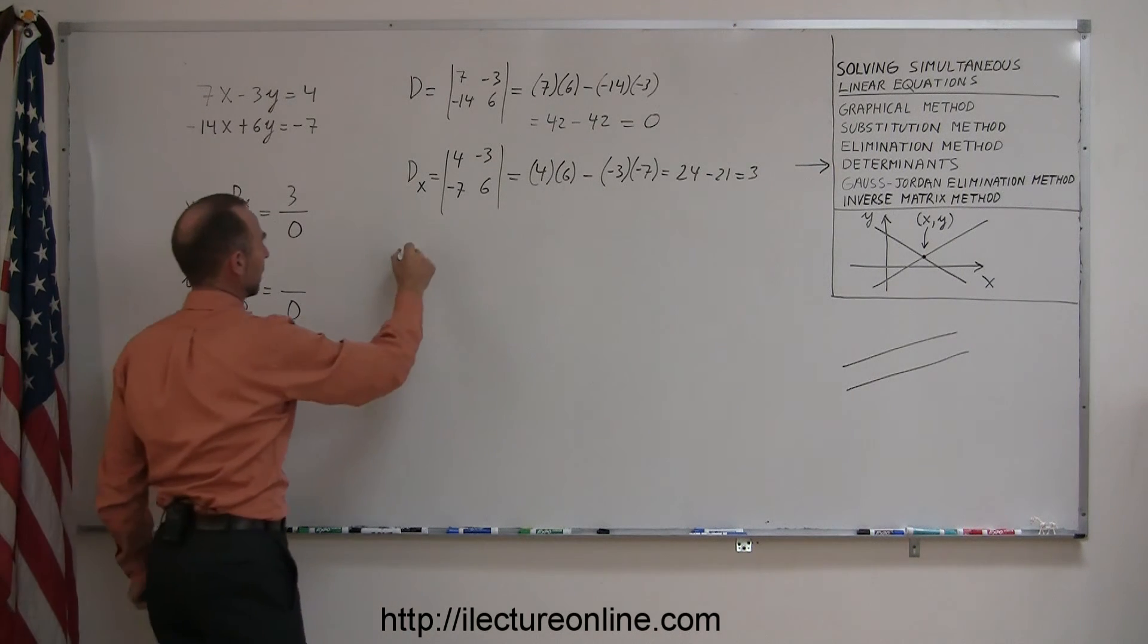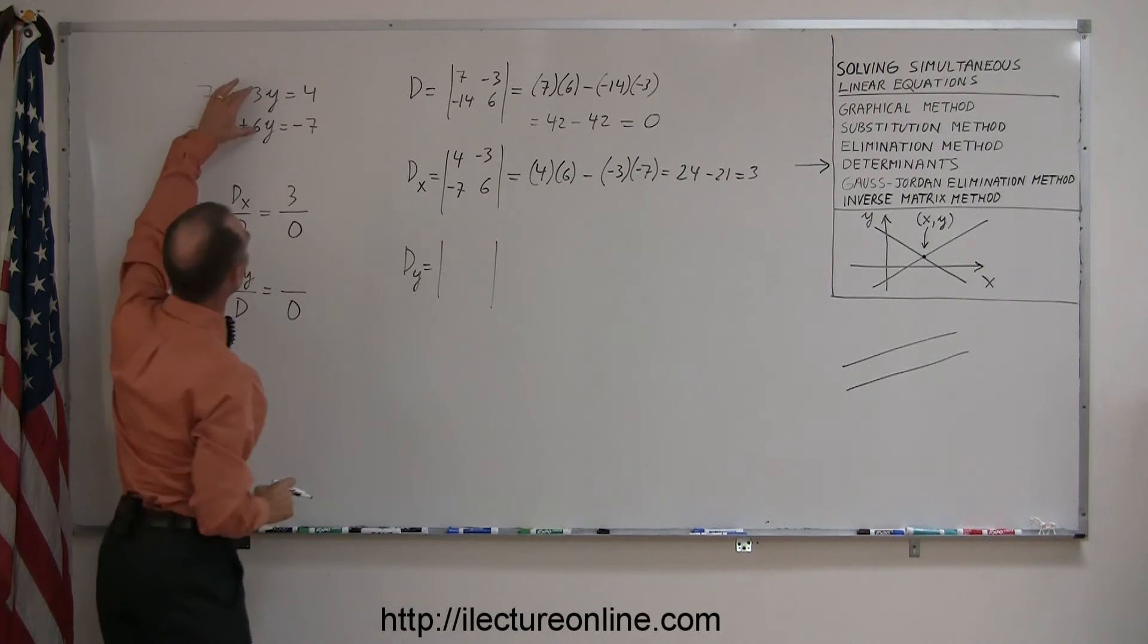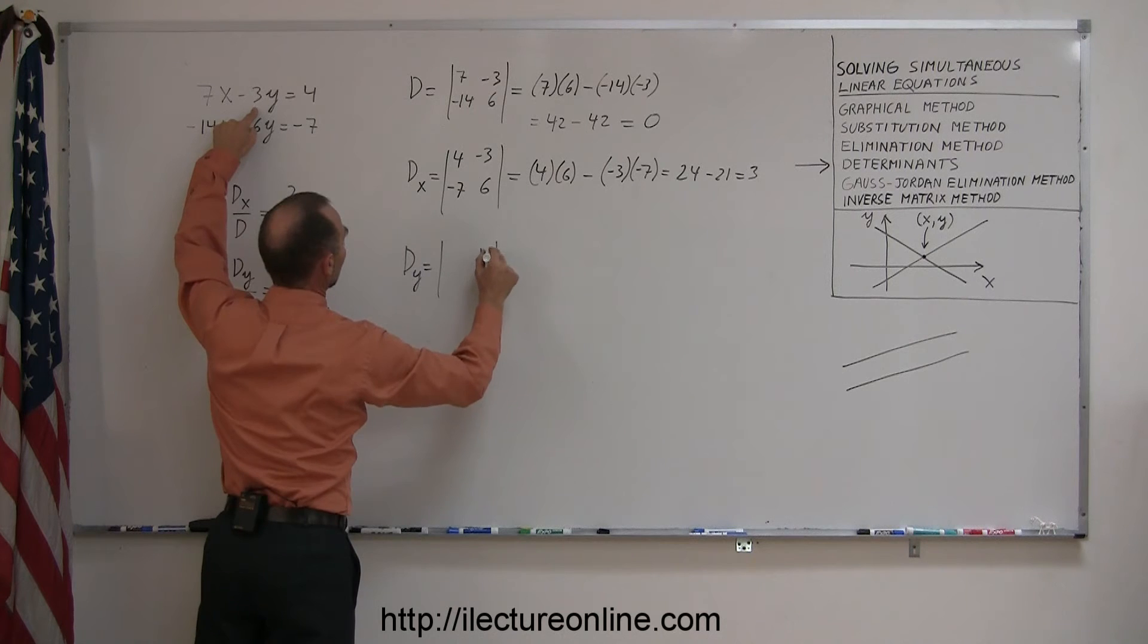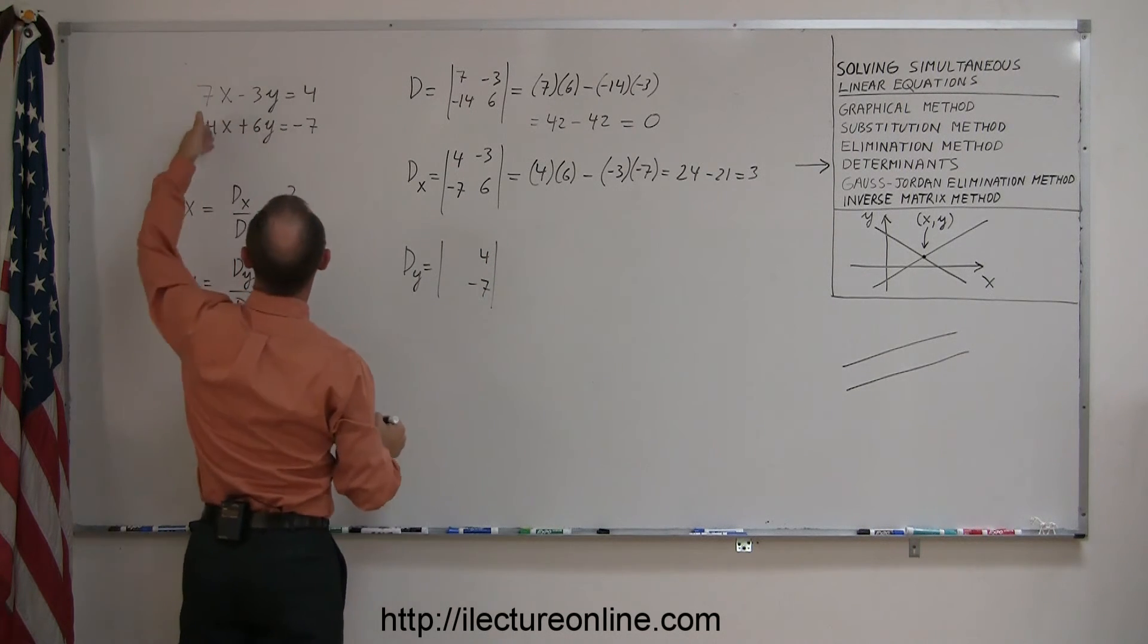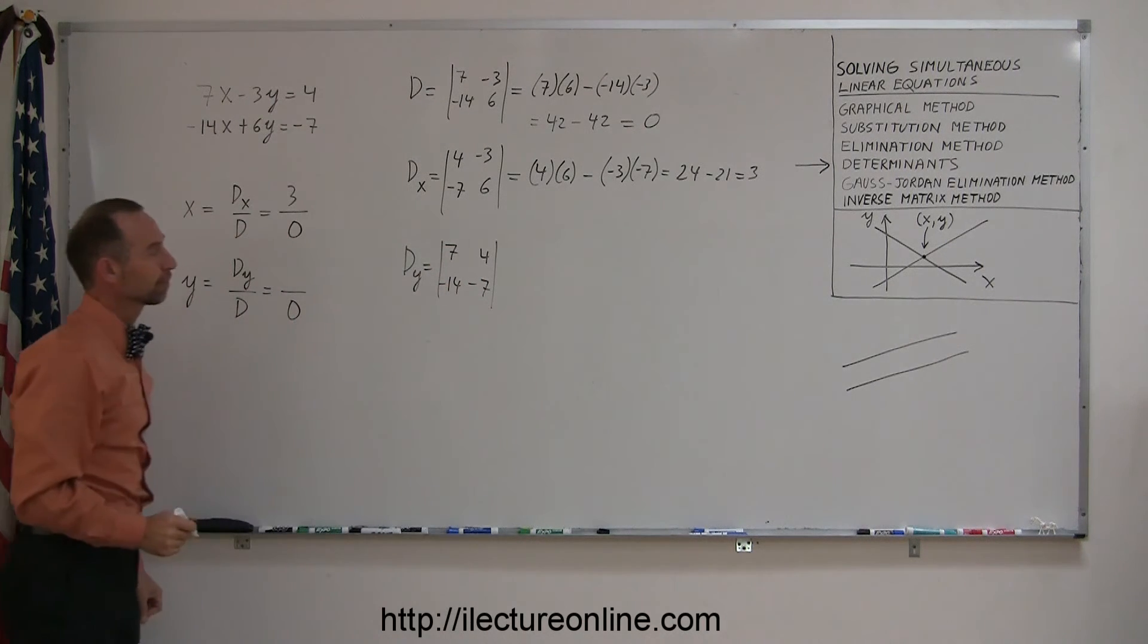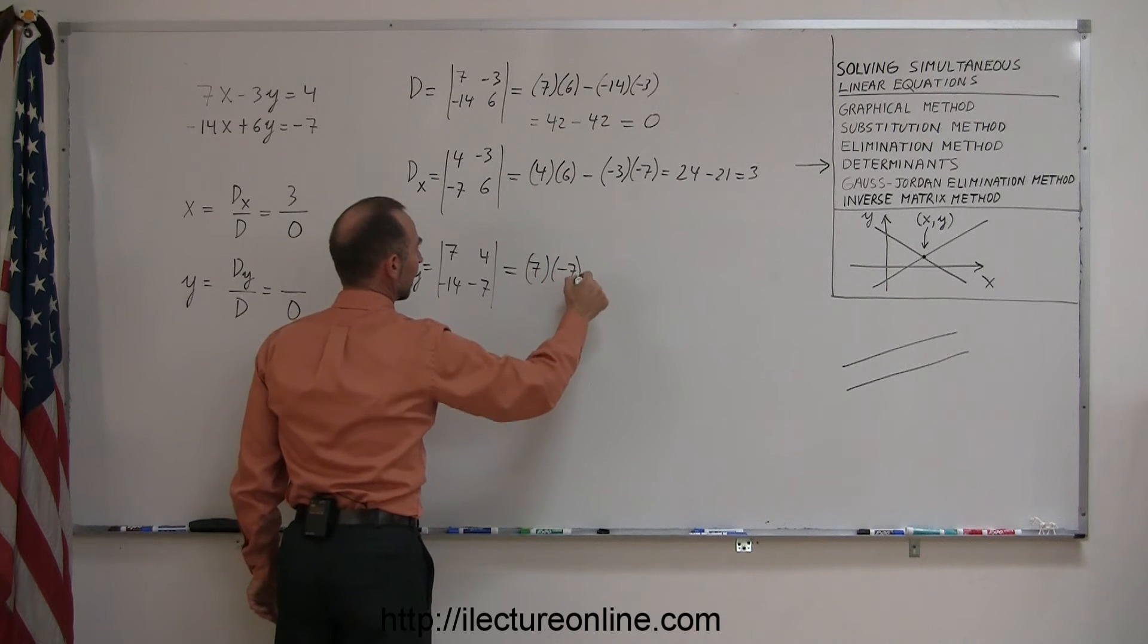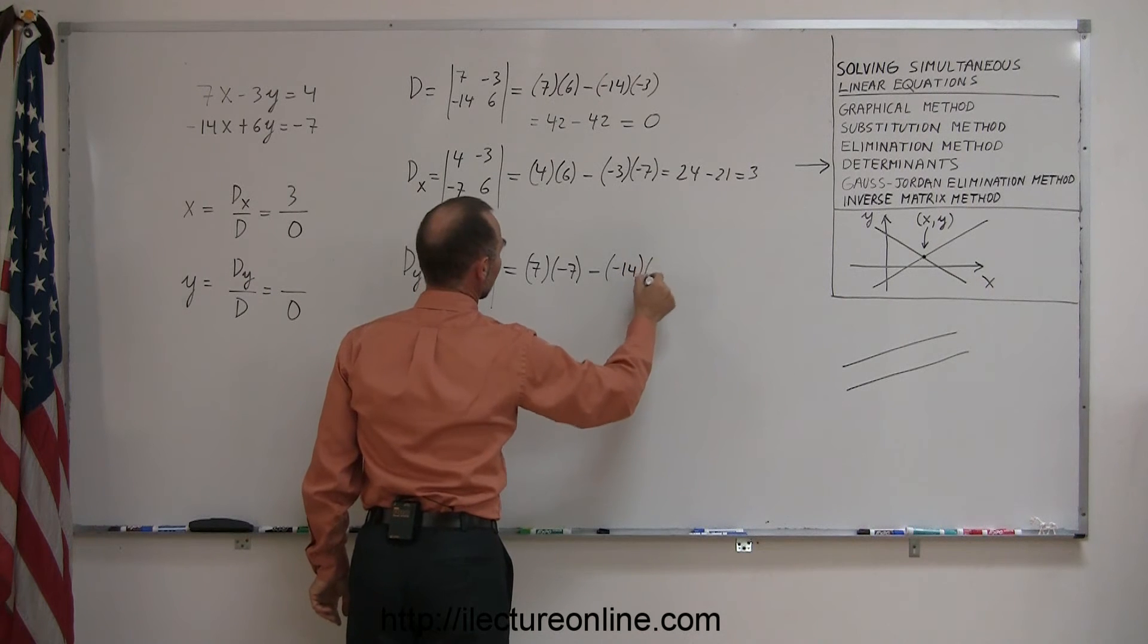For the d sub y, I take the very same determinant, but instead of writing the coefficients of the y variable, I plug in the 4 and the negative 7. So instead of negative 3, I write 4. Instead of positive 6, I write negative 7. And then the coefficients of the x variable remain the same. I now calculate that by multiplying these two numbers together in this diagonal, 7 times negative 7, and subtracting from that the product of negative 14 and positive 4.